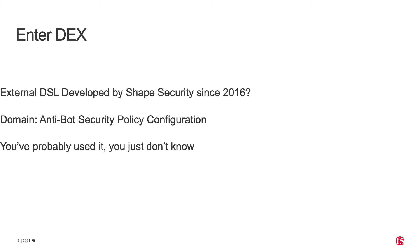DEX is an external DSL which Shape developed around 2016. You've probably used DEX unknowingly, because if you live in the United States and you access major websites — airlines, banks, hotel chains — then they very likely are using DEX in the sense that you've done some session or transaction with that site, and that has provoked a DEX program to run and evaluate whether you're a legitimate customer or a bot.